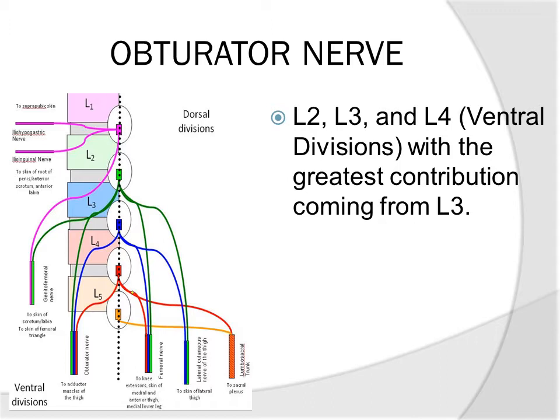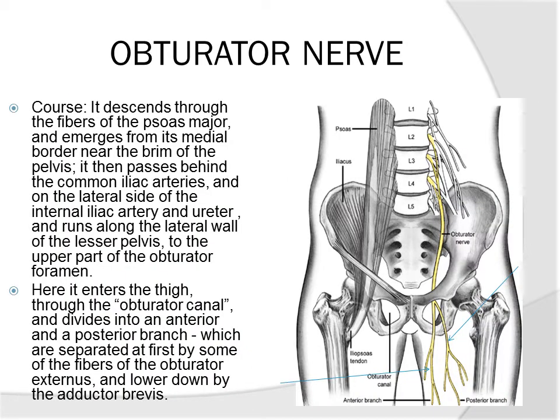The obturator nerve comes from the anterior divisions of L2, L3, and L4 nerve roots, and its greatest contribution comes from the L3 nerve root. The obturator nerve descends through the fibers of the psoas major, just like the lateral femoral cutaneous nerve and the femoral nerve. It has to come out from behind the psoas muscle.